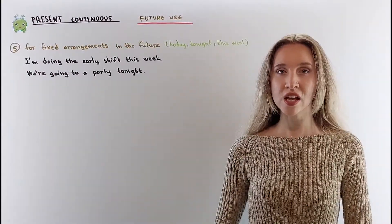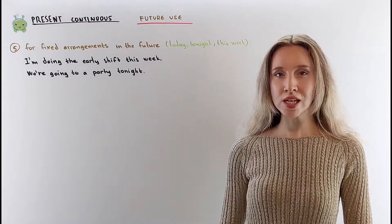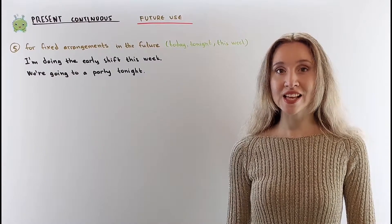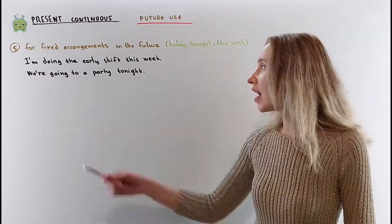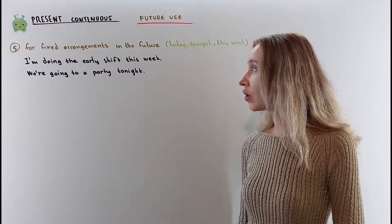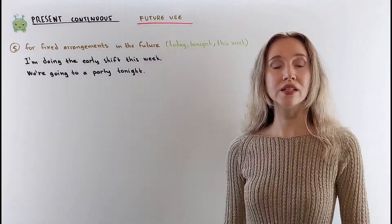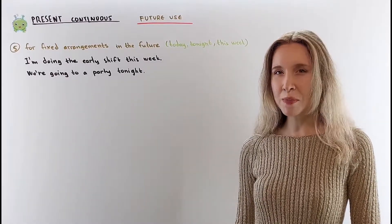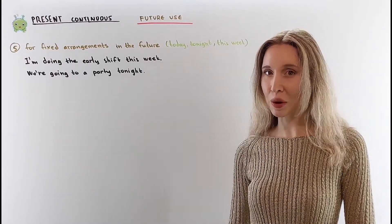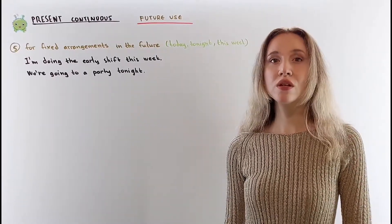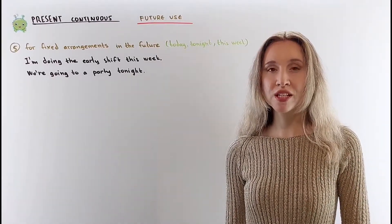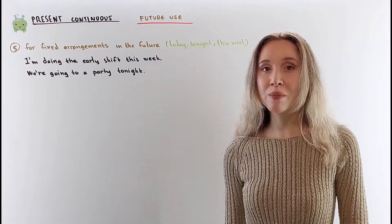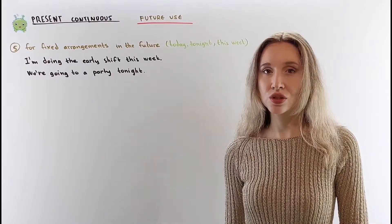Present continuous future use: use the present continuous for fixed arrangements in the future when the time and place have been decided. For example: I'm doing the early shift this week. We're going to a party tonight — it's arranged. Pause this video if you need more time, and use the present continuous to talk about your plans or something that you have arranged to do.